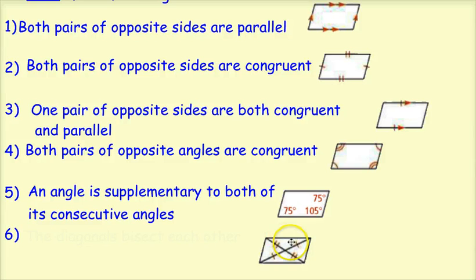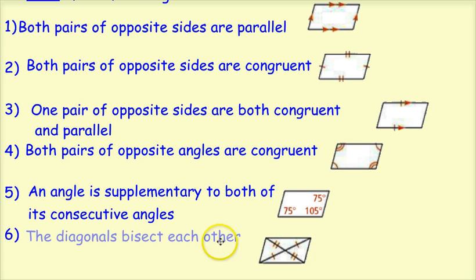The last way has to do with the diagonals. Remember, in a parallelogram the diagonals bisect each other. So if I can show that the diagonals bisect each other, then it's a parallelogram.